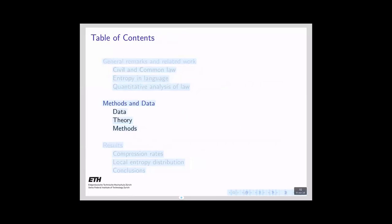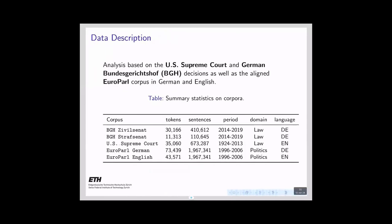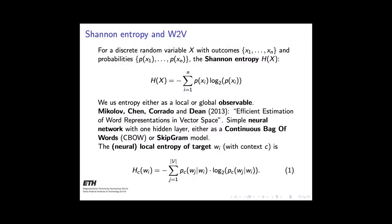Our analysis is based on U.S. Supreme Court rulings, German Bundesgerichtshof decisions, and the aligned Europarl corpus in German and English. The main mathematical entity we use is Shannon entropy. Entropy can be considered either as a local or global observable — local meaning the entropy of a word in context, measuring its 'temperature,' or global meaning the temperature of an entire text.